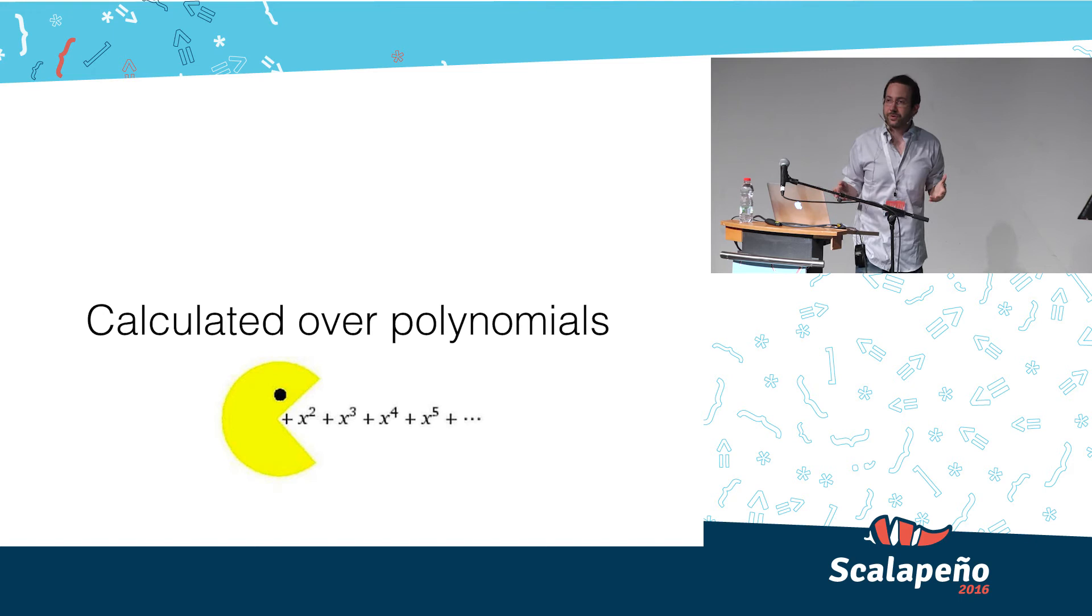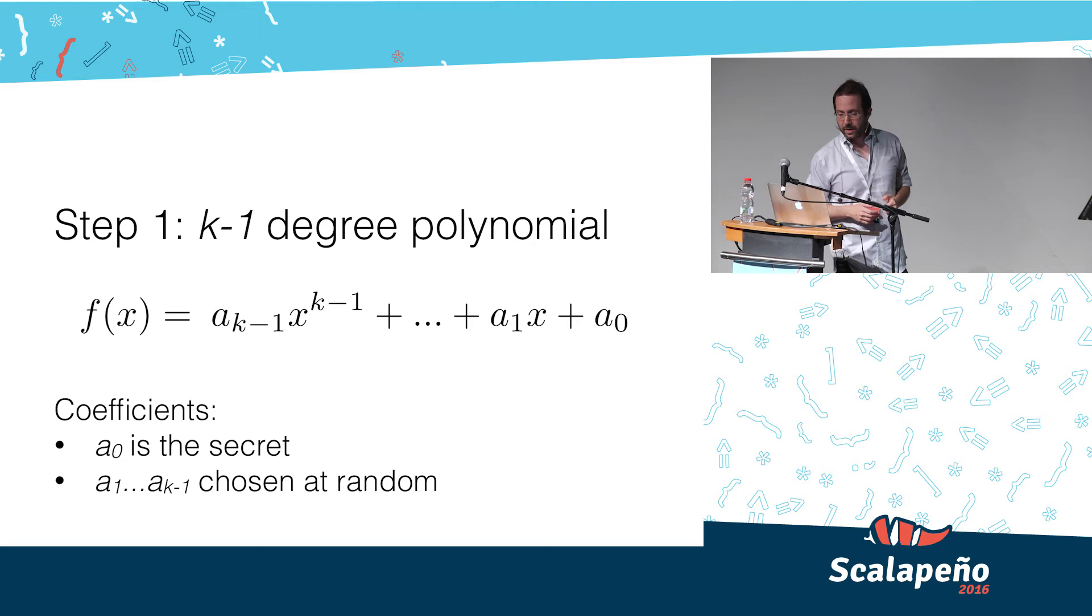So, how is that accomplished? Well, it's all calculated over polynomials. Let's look at a polynomial. This is a K minus one degree polynomial. K being the threshold we described earlier.